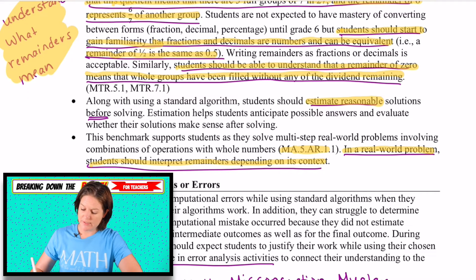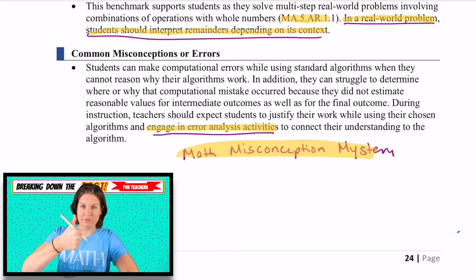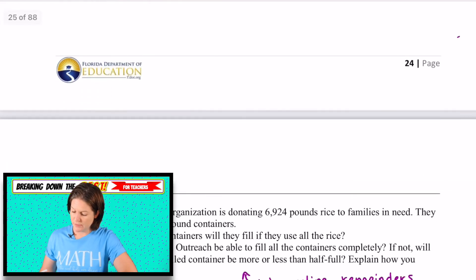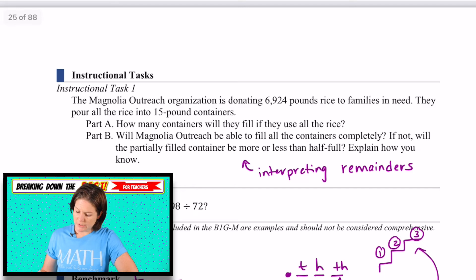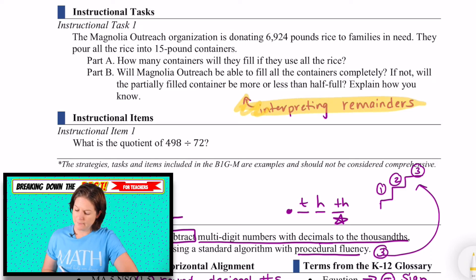And also that they should be able to understand that a remainder of zero means we should erase everything, means that the whole groups have been filled without any of the dividend remaining. So really taking time, not just to solve these problems, but to explain what the answer means, what the quotient means. Of course, here it says we're going to estimate before solving. We do that. And taking on the best, I'll show you. And down here, they mentioned that students should engage in error analysis activities, which I love because math misconception mystery covers you there. And there's other problems as well. Just looking here at the instructional task we have here that they're just practicing interpreting remainders, which I liked that they were doing that. So you can take a look at that there.